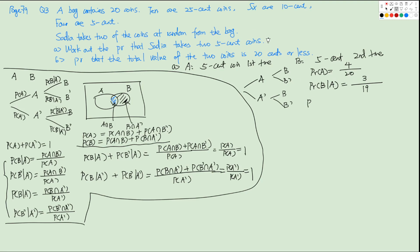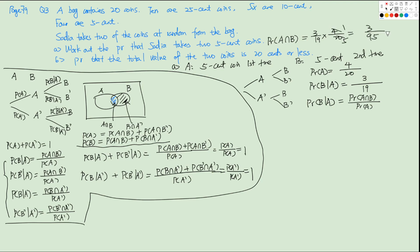We are looking for P(A∩B). So P(B|A) equals P(A∩B) over P(A), which means P(A∩B) = P(B|A) × P(A) = 3/19 × 4/20 = 3/95. That's the answer to question A.